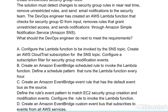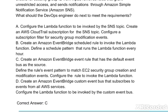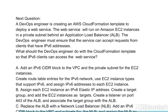What should the DevOps engineer do next to meet these requirements? Option A: Configure the Lambda function to be invoked by the SNS topic; create an AWS CloudTrail subscription for the SNS topic and configure a subscription filter for security group modification events. Option B: Create an Amazon EventBridge scheduled rule to invoke the Lambda function; define a schedule pattern that runs the Lambda function every hour. Option C: Create an Amazon EventBridge event rule that has the default event bus as the source; define the rule's event pattern to match EC2 security group creation and modification events; configure the rule to invoke the Lambda function. Option D: Create an Amazon EventBridge custom event bus that subscribes to events from all AWS services and configure the Lambda function to be invoked by the custom event bus. The correct answer is Option C.